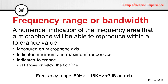The frequency range or bandwidth is a numerical indication of the frequency area that a microphone will be able to reproduce within a tolerance value. It is always measured on the microphone axis and indicates the minimum and maximum frequency the microphone can pick up. It doesn't indicate how accurately those signals will be reproduced — it also needs to indicate the tolerance, that is the dB above or below the 0 dB line.